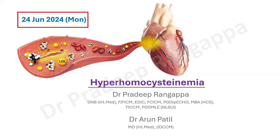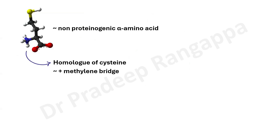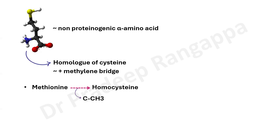This is more for physicians who need clarity on this topic, and it is good for intensivists to have clarity as well. This figurative representation shows homocysteine that has caused atheromatous plaque disruption. Homocysteine is a non-proteinogenic alpha amino acid, very similar to cysteine — it is a homologue of cysteine. Additionally, it has a methylene bridge, which cysteine does not have, and this is what causes homocysteine.